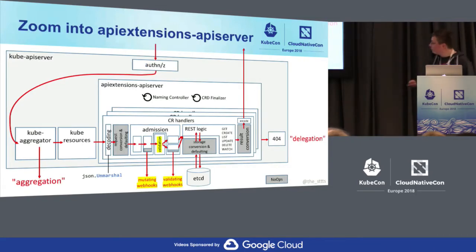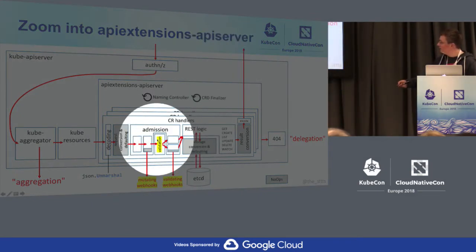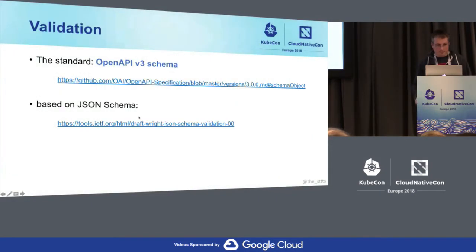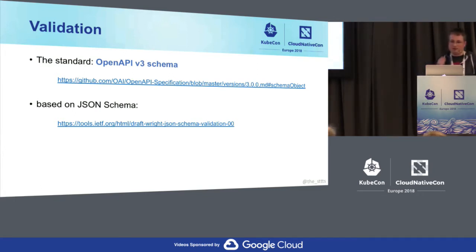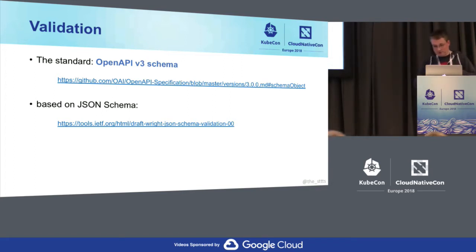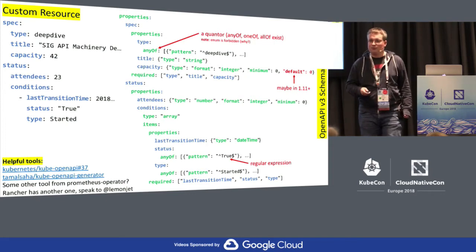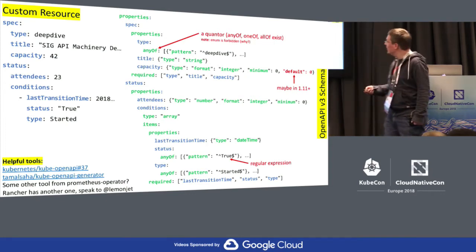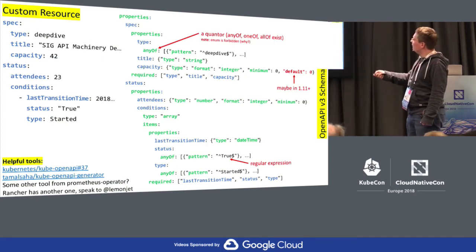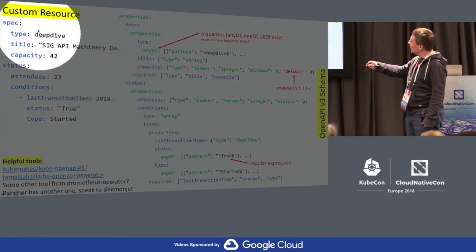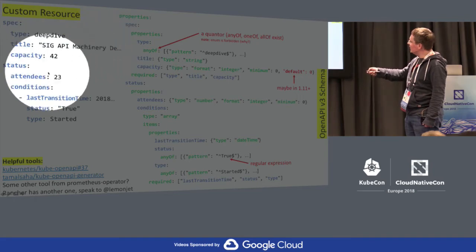Validation: it's here in the flow as an OpenAPI v3 schema-based validation step. OpenAPI v3 schemas are basically JSON schemas with some extensions and some restrictions. For everybody who hasn't defined validations for CRDs — do it. I have an excerpt of our example here: it's a session with spec and status. The type is a deep dive, title is a string, capacity is type number with format integer and a minimum of zero.